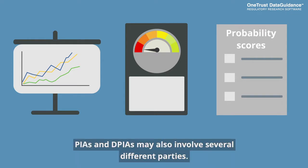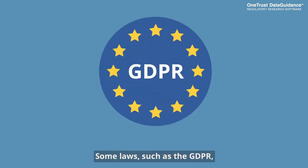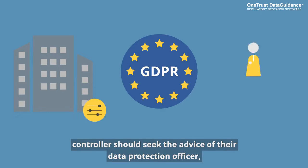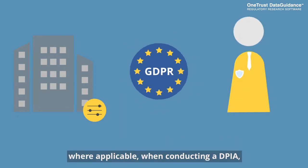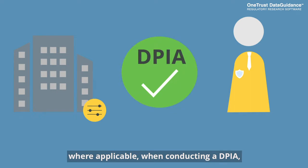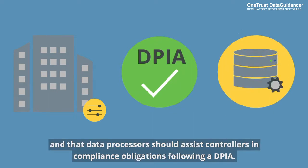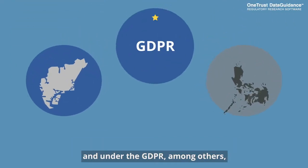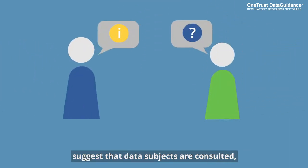PIAs and DPIAs may also involve several different parties. Some laws, such as the GDPR, explicitly state that a data controller should seek the advice of their data protection officer, where applicable, when conducting a DPIA, and that data processors should assist controllers in compliance obligations following a DPIA. Other legislative frameworks, including the Philippines, Singapore, and under the GDPR among others, suggest that data subjects are consulted, where appropriate, as part of a DPIA.